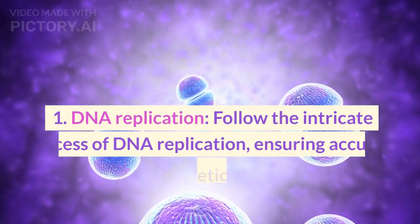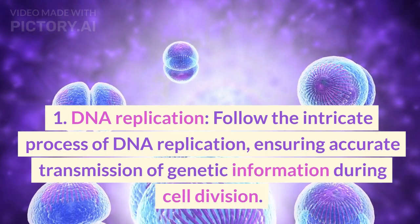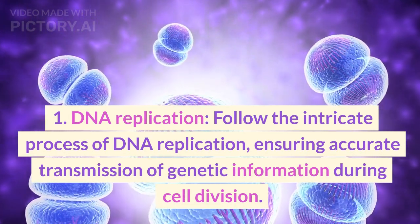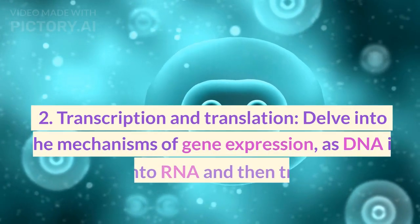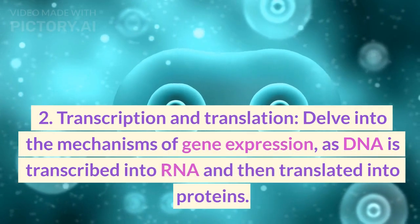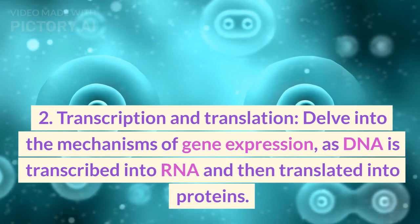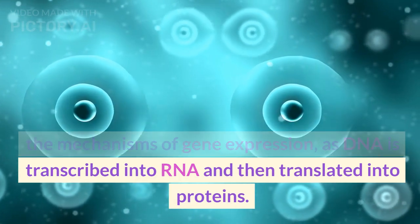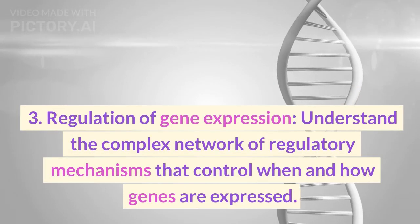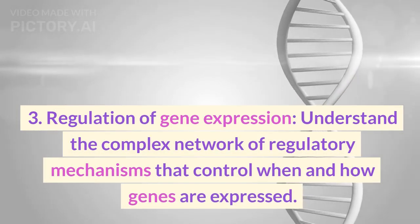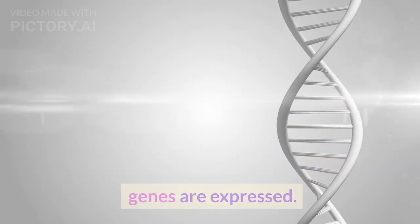2.2 DNA Replication and Gene Expression. 1. DNA Replication — follow the intricate process of DNA replication, ensuring accurate transmission of genetic information during cell division. 2. Transcription and Translation — delve into the mechanisms of gene expression, as DNA is transcribed into RNA and then translated into proteins. 3. Regulation of Gene Expression — understand the complex network of regulatory mechanisms that control when and how genes are expressed.